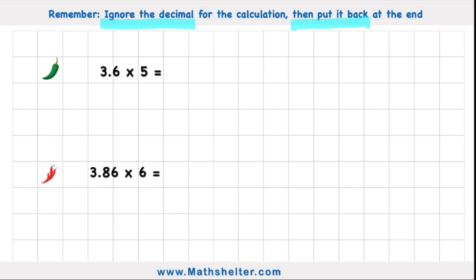So let's see what that means with our first challenge, our green chili challenge. So our green chili challenge says 3.6 multiplied by 5. But remember, we're going to ignore the decimal at the start. So if we get rid of this decimal number just here, I end up looking at 36 times 5.